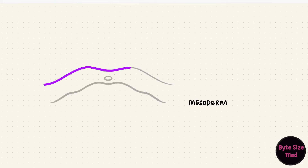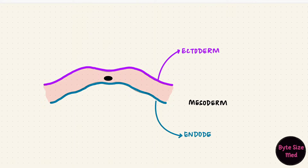The heart develops from the mesoderm. Remember the three germ layers? There's the ectoderm, the endoderm, and the mesoderm. The mesoderm has three parts: the paraxial mesoderm, the intermediate mesoderm, and the lateral plate mesoderm.